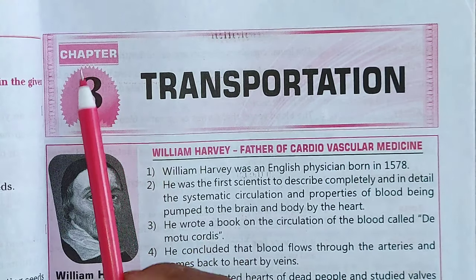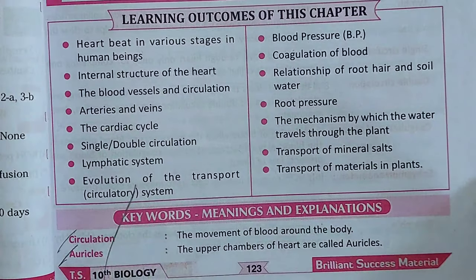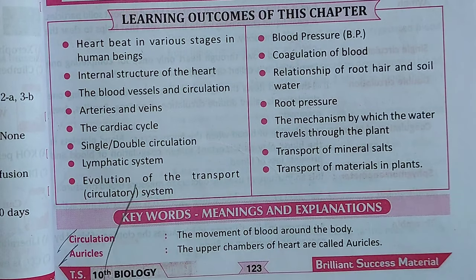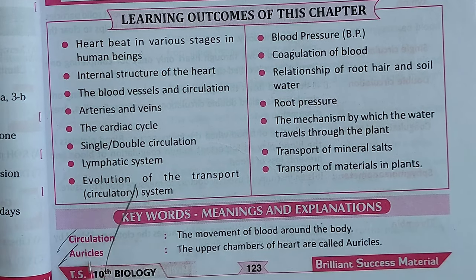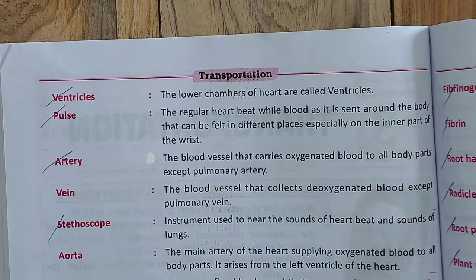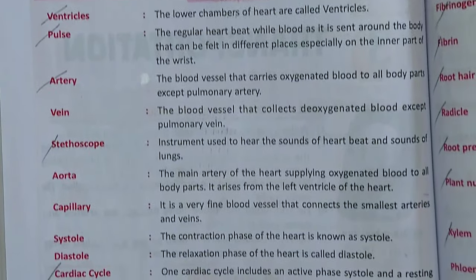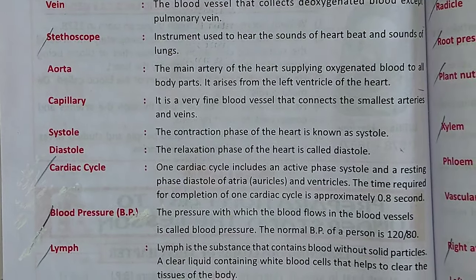As you can see here, chapter 3 Transportation — first we will see keywords and their meanings and explanations. You can see in this page we have two keywords, and in the next page we have some more. We have keywords like this, continuously moving through the pages.